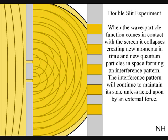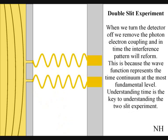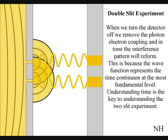When the observer turns on the detector to determine which slit a photon passes through, the interference pattern collapses. This is because to observe the photon, we have to create a photon-electron coupling, collapsing each wavefront into a new quantum particle that will have its own position in space and time. If we turn the detector off, we remove the photon-electron coupling, and in time the interference pattern will reform.